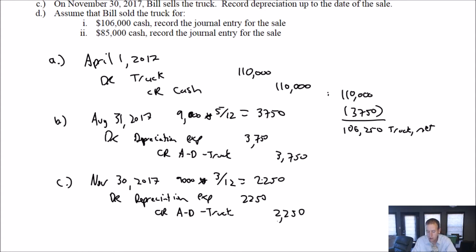So just out of curiosity, what's my truck's net book value on the date of the sale? Well, again, the truck's cost was $110,000. The amount of depreciation so far has been $3,750 and $2,250. The amount of the depreciation so far has been $6,000. And that's just $3,750 plus $2,250. That's the accumulated depreciation. So again, truck minus accumulated depreciation equals truck net. Our truck's net book value is $104,000.